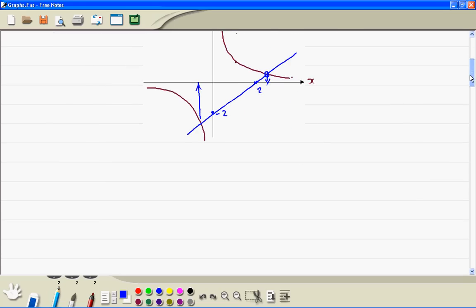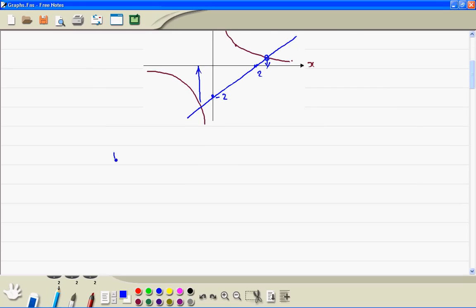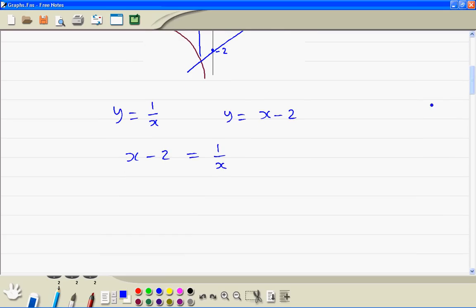Let's solve these two equations simultaneously then. Here, y is equal to 1 over x, and y is equal to x minus 2. So y is common, so that cancels out. So x minus 2 is equal to 1 over x. Now we multiply both sides by x. So we get x squared minus 2x, and right hand side is just 1.